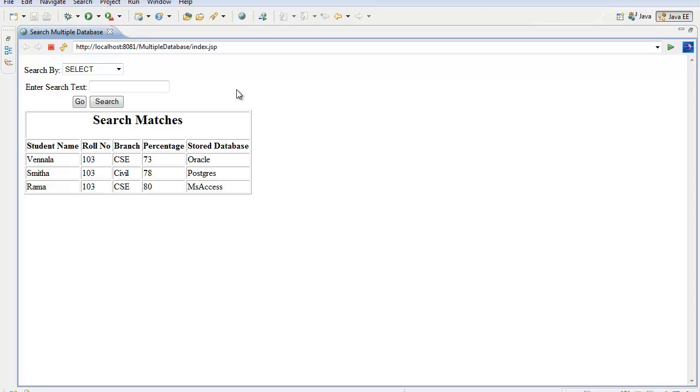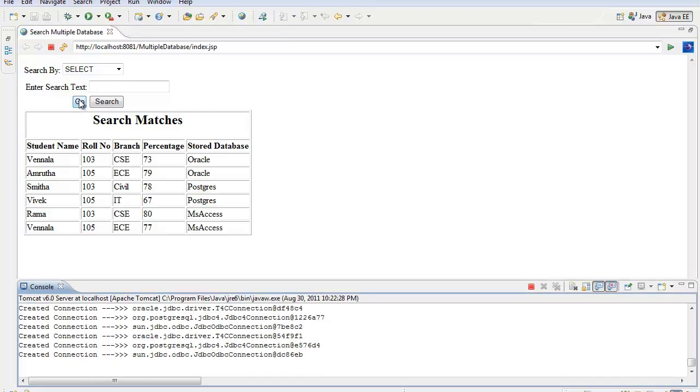In case if one wants to append the records to the output, we can use the Go option. This can be explained by taking 105 role number and using the Go option. The records having the role number 105 are appended to the records which already existed as output.